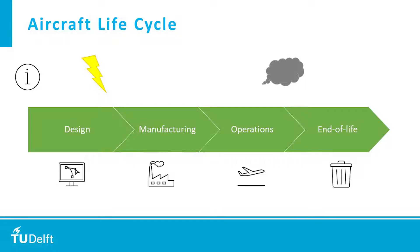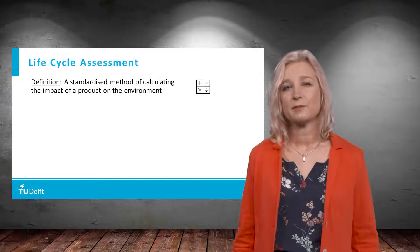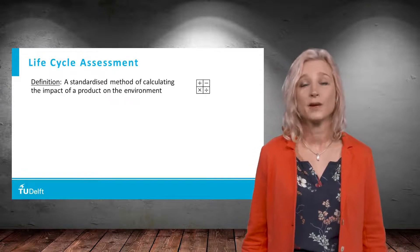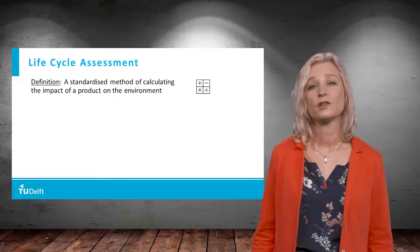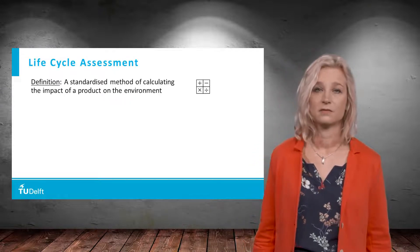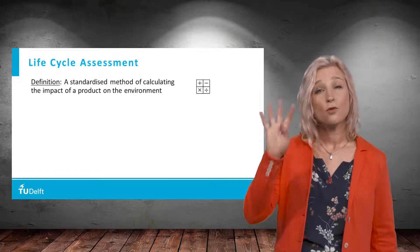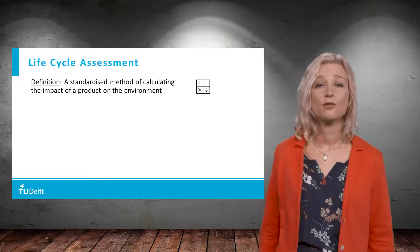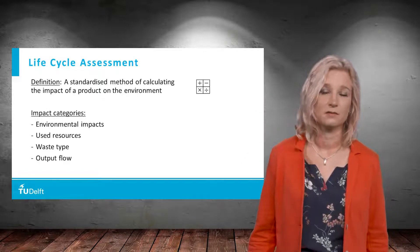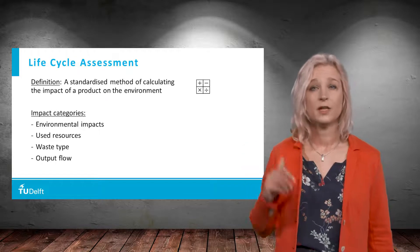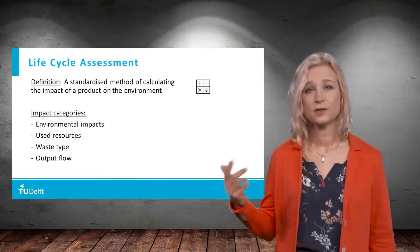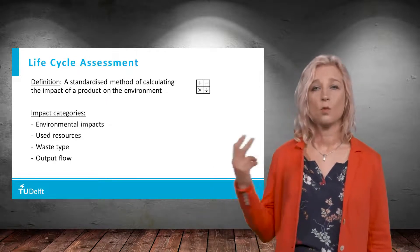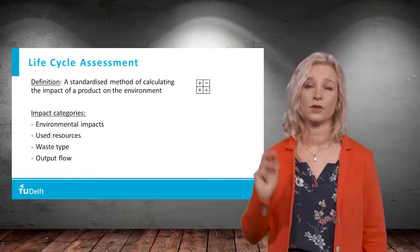These environmental effects can be quantified using a life cycle assessment. This is a standardized method of calculating the impact of a product on the environment. There are four types of impact categories: environmental impacts, used resources, waste type, and output flows.